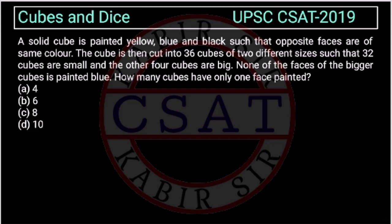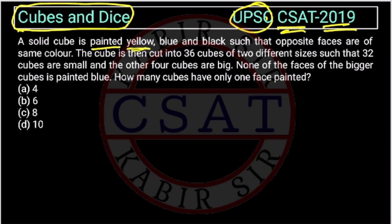Let us see this question from the cube and dice chapter asked by UPSC in CSET exam of 2019. This is a good question. A solid cube is painted yellow, blue and black, such that the opposite faces are of same colour.